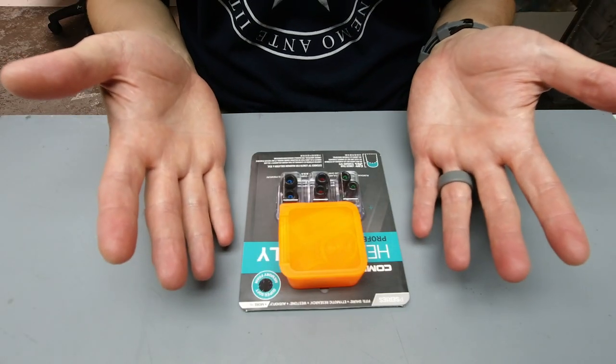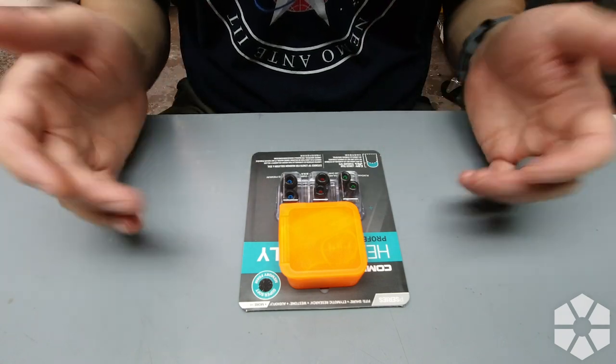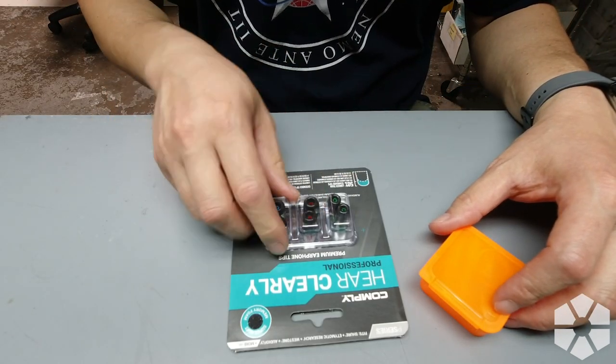Here we are, so you've been standing by your mailbox all week waiting for these to show up. You open the package, and this is what you're going to find inside: a set of small, medium, and large ear tips from Comply.